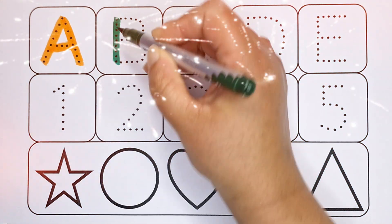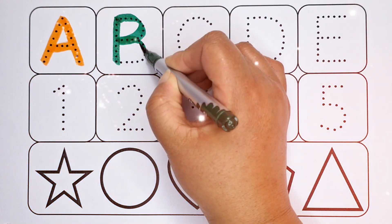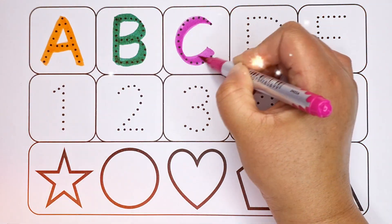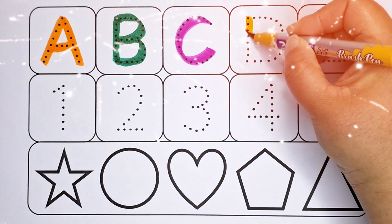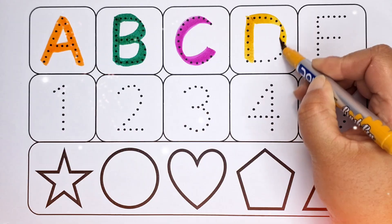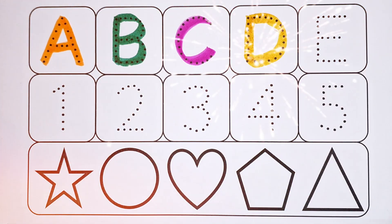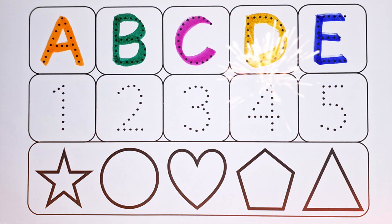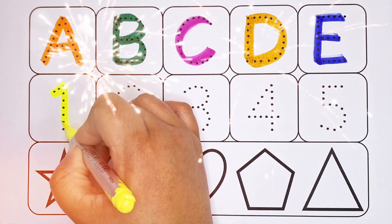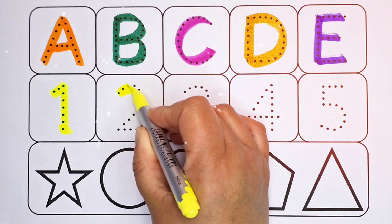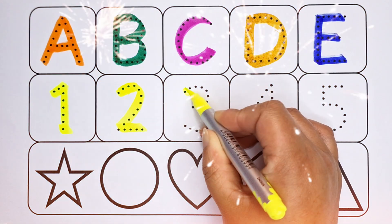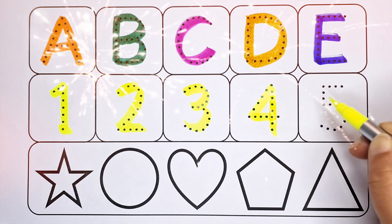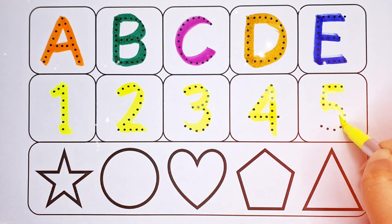Dark green color, B, B for buzz. Pink color, C, C for cow. Yellow color, D, D for dragon. Blue color, E, E for eagle. Yellow color. Number one, number two, number three, number four, number five.